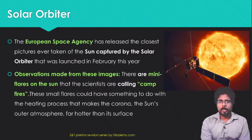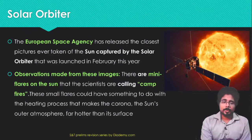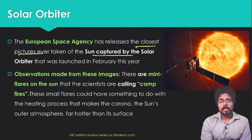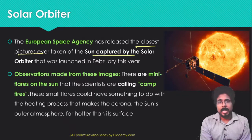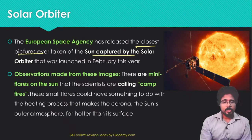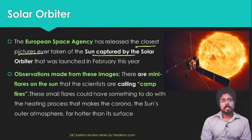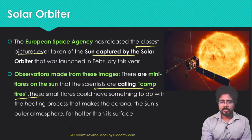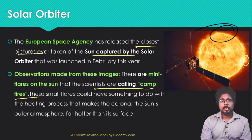The Solar Orbiter is in news because the European Space Agency's Solar Orbiter has released the closest pictures ever taken of the Sun. The Solar Orbiter is a project of the European Space Agency and NASA. The observations from these images show there are many flares on the Sun that scientists are calling 'campfires' — mini flares that have been observed on the Sun's surface.